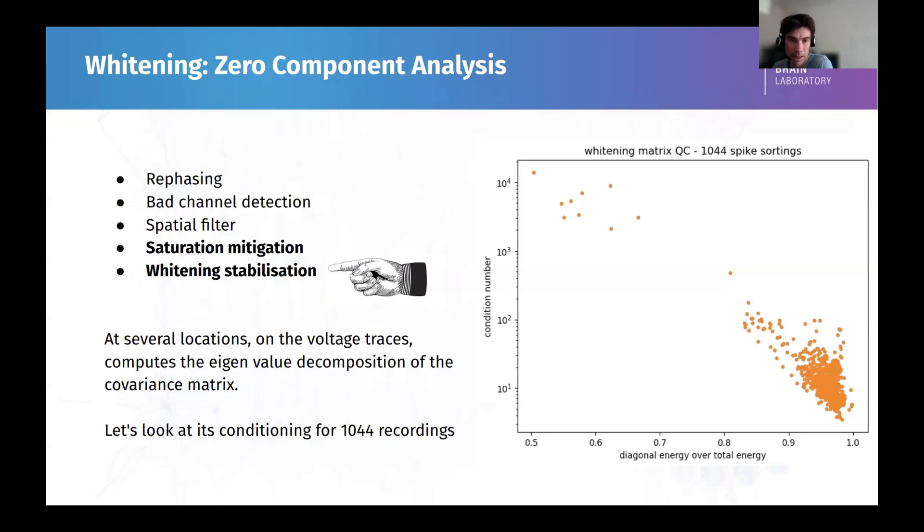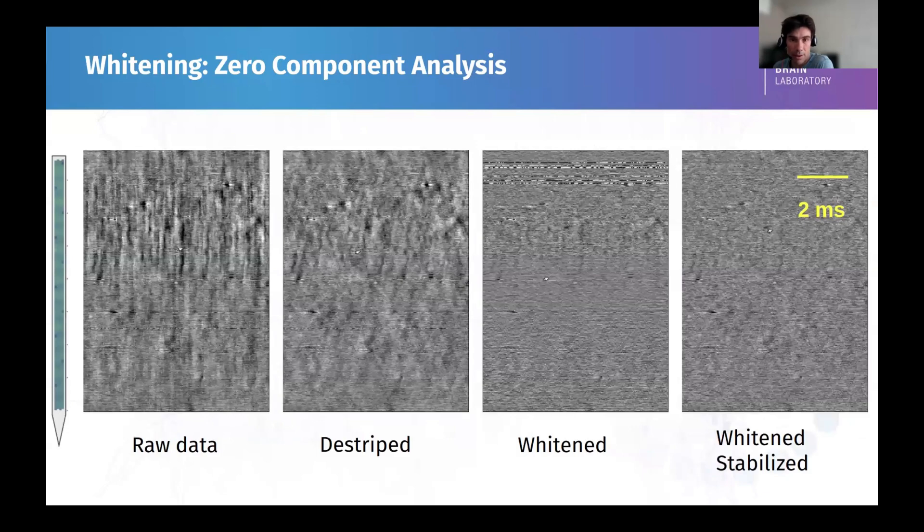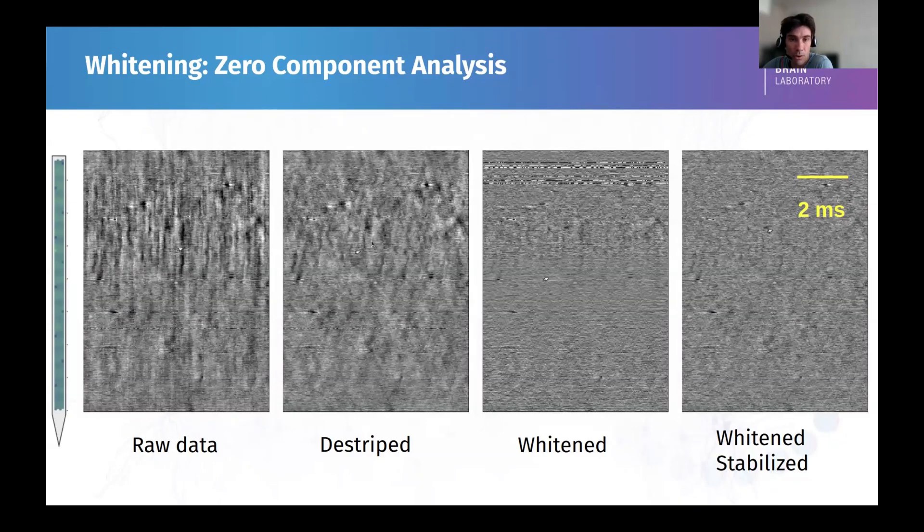And what happens here is that the data is transformed in a catastrophic way by the spike sorter, and we cannot detect any spike. So we have to stabilize a bit this inverse. And this is an example of what happens here on the raw data after the destriping or the preprocessing. And if you do a straight whitening on this dataset, you end up with very noisy channels. As you can see, the spike sorting, the clustering algorithm is operating on this whitened data, and this is not ideal at all.